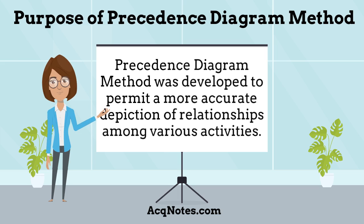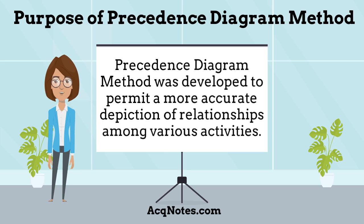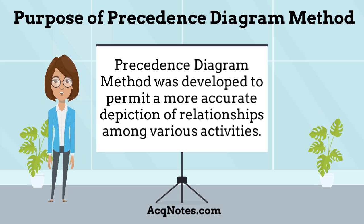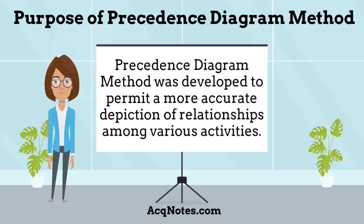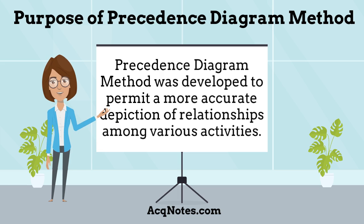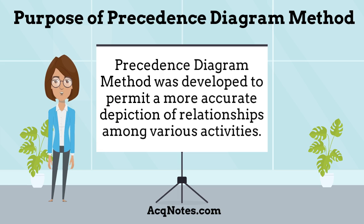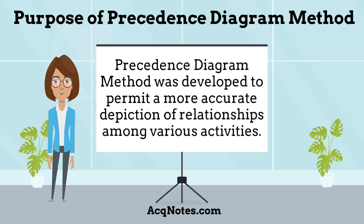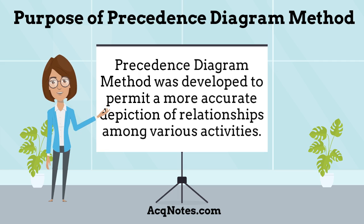What is the purpose of the precedence diagram method? The program evaluation and review technique, PERT, and critical path method, CPM, techniques are essentially limited to finish-to-start relationships — basically, activity B cannot start until activity A is completed. PDM was developed subsequent to the PERT and CPM techniques, and its function is to permit a more accurate depiction of relationships among various activities.